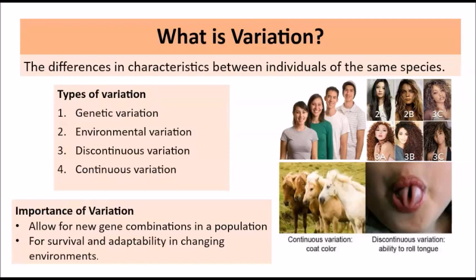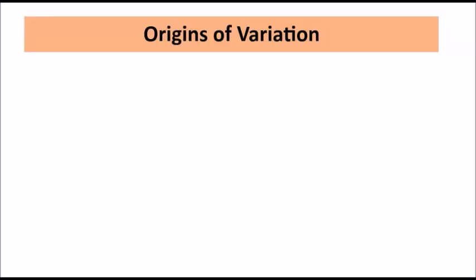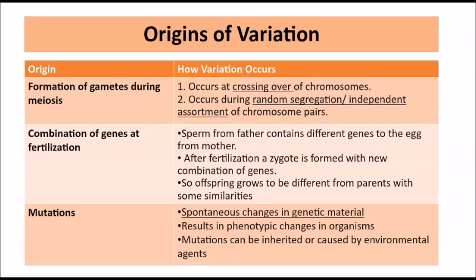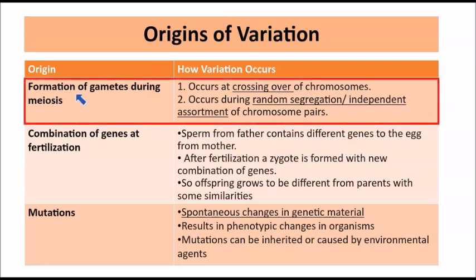So let's look at the origins of variation — where does variation originate from? There are three different origins of variation. The first one is the formation of gametes during meiosis. In meiosis we have the gametes being formed — the sperm and the egg. During that process of meiosis, genetic variation comes about particularly at the crossing over of chromosomes and also during random segregation, also known as independent assortment of the chromosome pairs. These are two events that occur within meiosis that contribute to genetic variation.